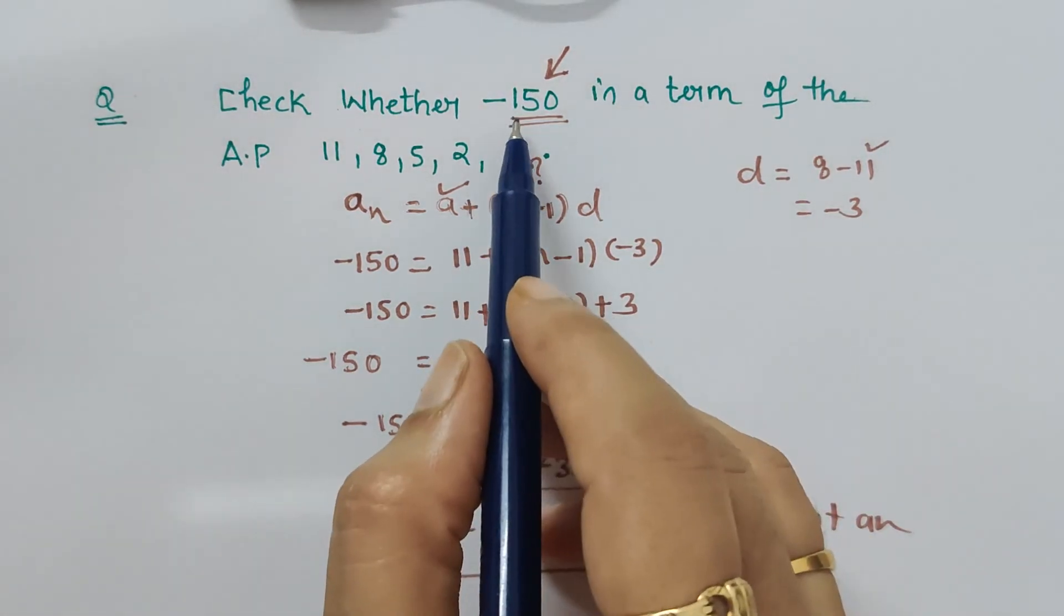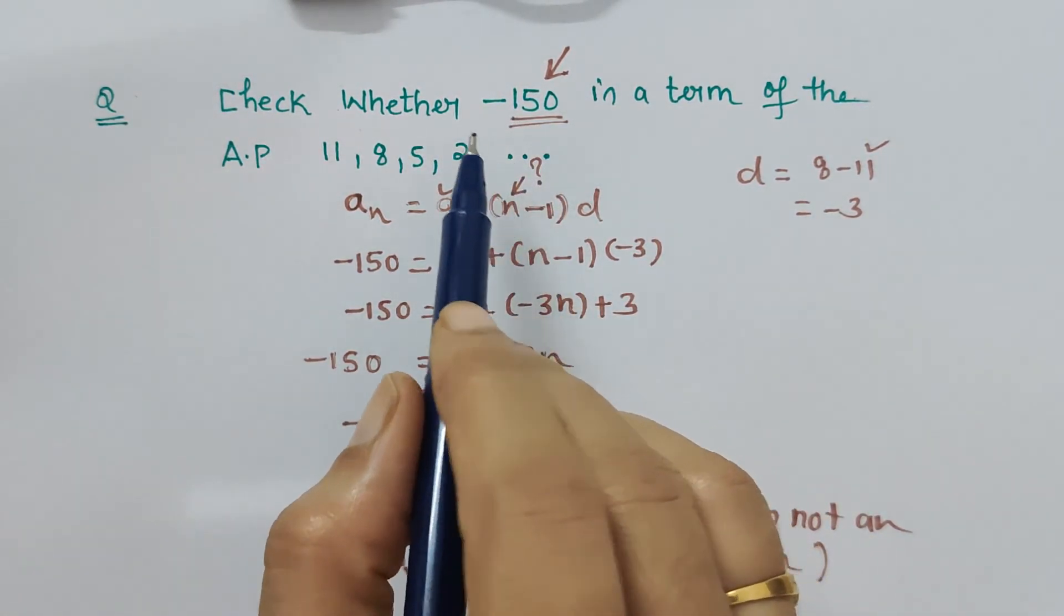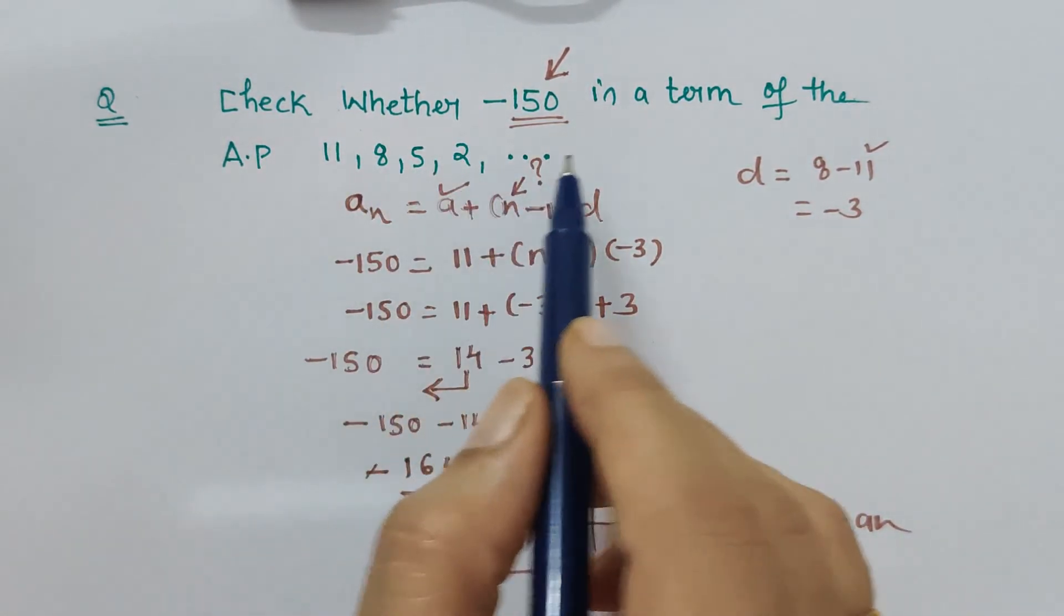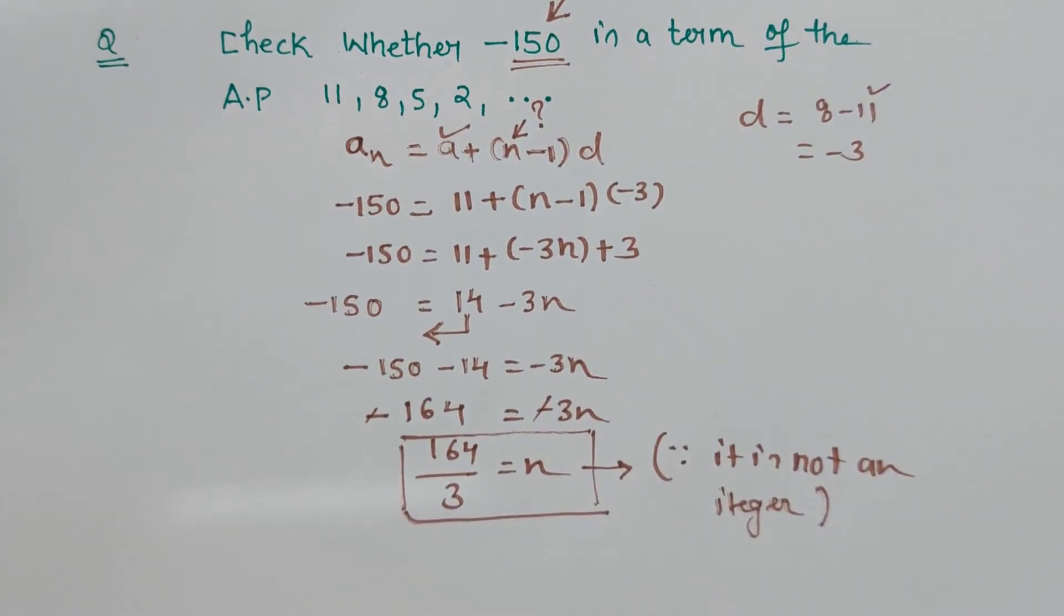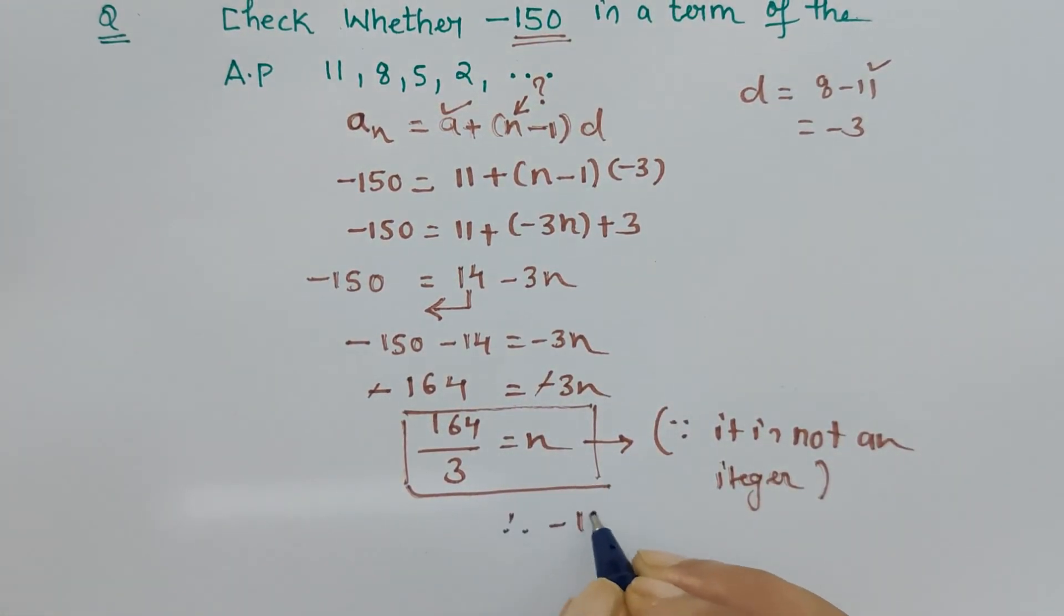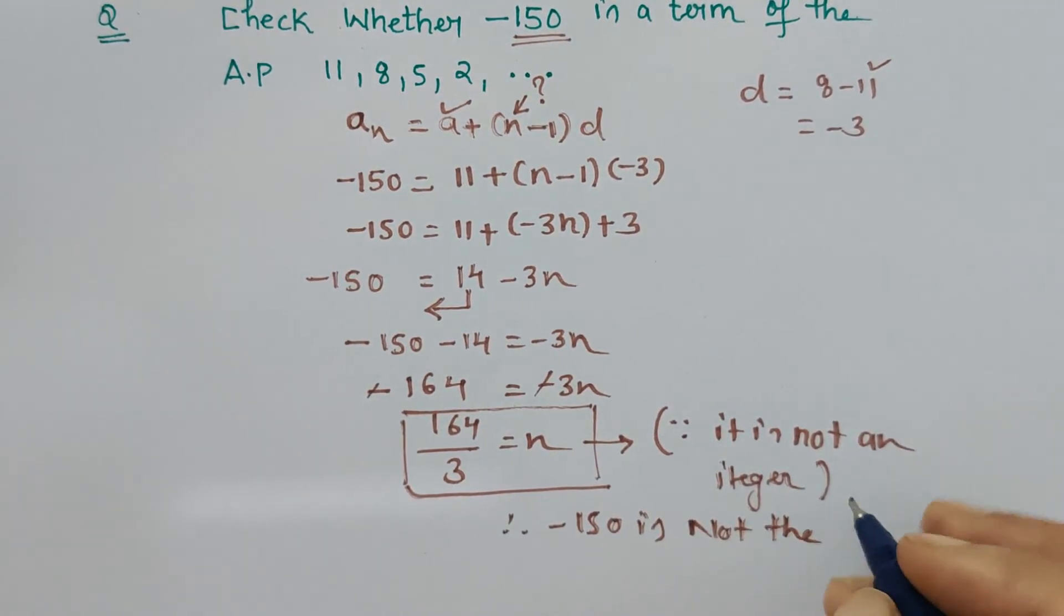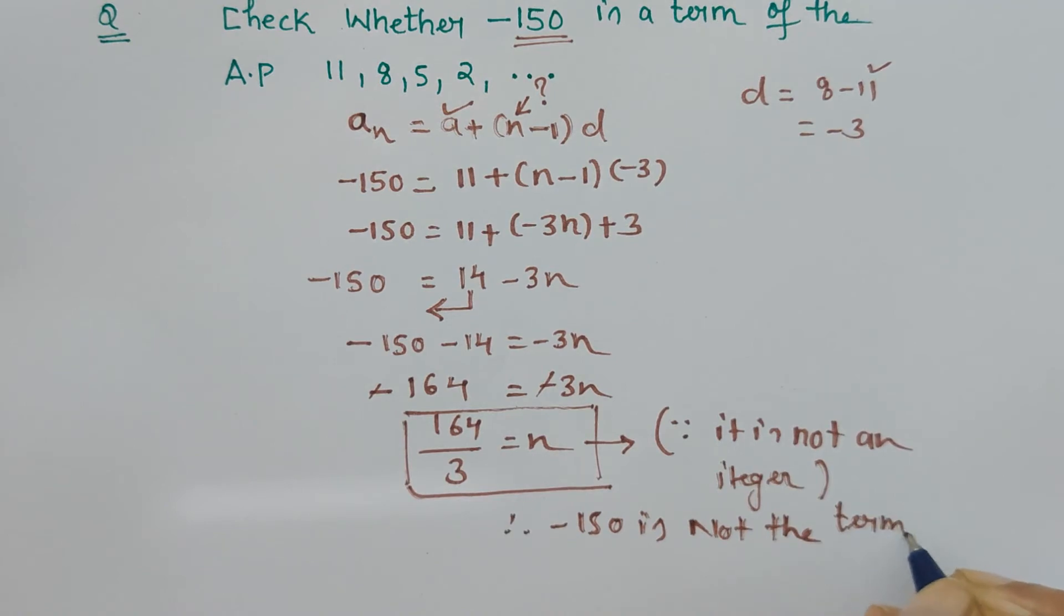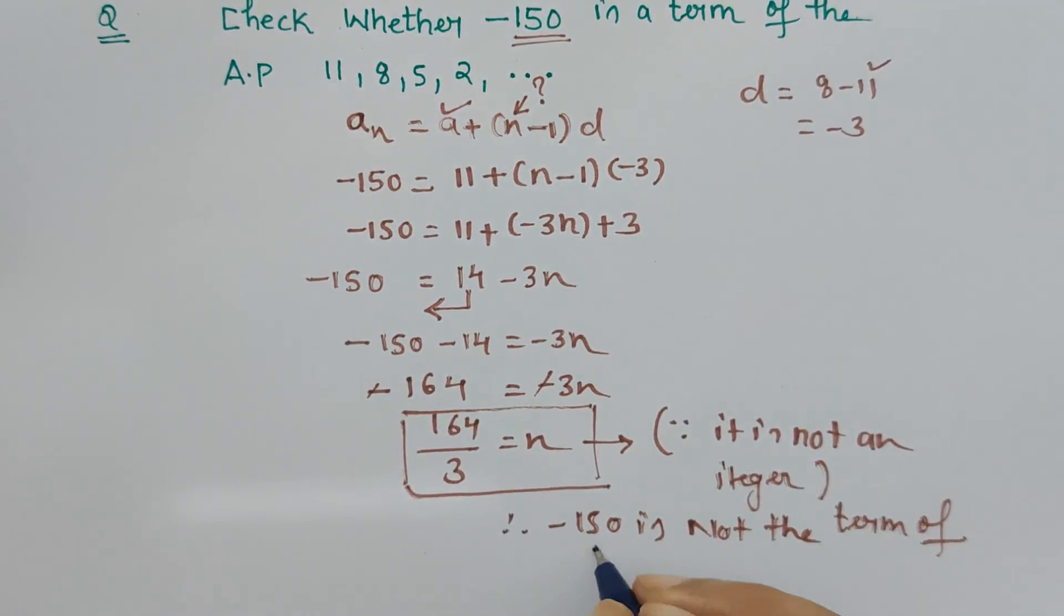Therefore we can say that -150 is not a term of this arithmetic progression or arithmetic sequence. Therefore, -150 is not the term of the given AP.